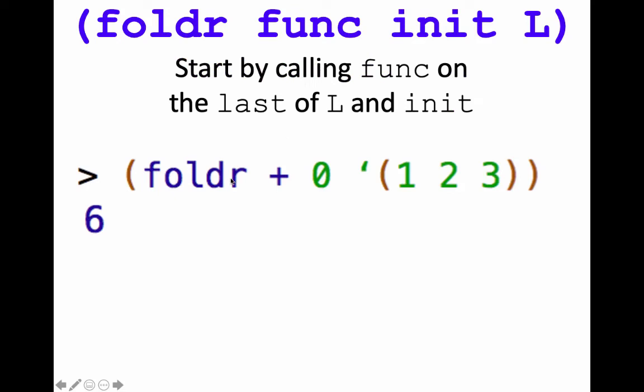So here, foldr is provided the function plus, an initial or base case value of 0, and then the list 1, 2, 3. We get the answer 6 because it's adding up all the elements in the list in addition to 0. Now technically, this goes in a particular order.